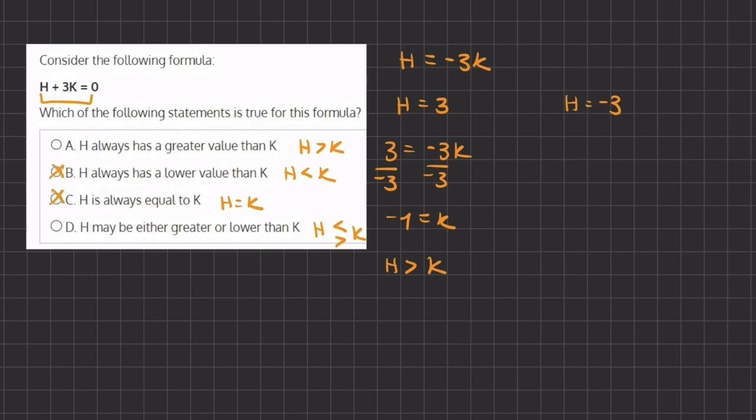Now let's take a look at when H is negative 3. When H is negative 3, we have negative 3 equals negative 3 times K. And if we again divide negative 3 on both sides, we are left with positive 1 equals K. And that means that in this case, H is smaller than K, is less than K.